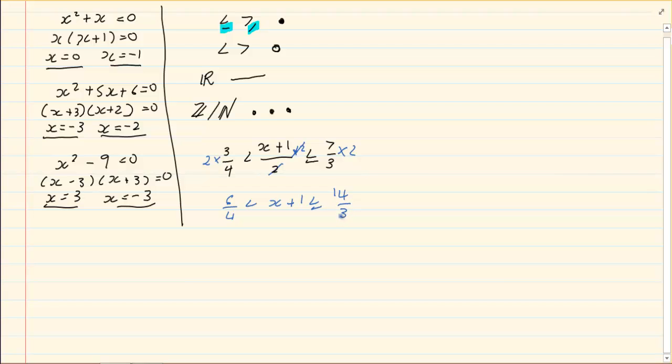Now after you have done that we are going to get the x alone. So we are going to do the opposite of plus 1 which is minus 1, so I am going to subtract 1 on both sides. It is like you are doing 2 separate equations. So you look at the x plus 1 and the 6 over 4, then you solve it, and then look at the x plus 1 and your 14 over 3 and solve it. So there are 2 equations.